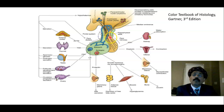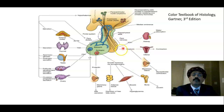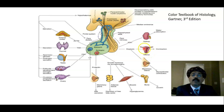From the posterior pituitary — from the pars nervosa — we have the anti-diuretic hormone, also called vasopressin, which is essential to maintain fluid balance. It works on the distal convoluted tubule and collecting duct of the nephron, and it is also a vasoconstrictor. Oxytocin works on the myoepithelial cells of the breast to eject milk, and also on the uterus — especially during labor — contracting the uterine muscle to help deliver the baby.